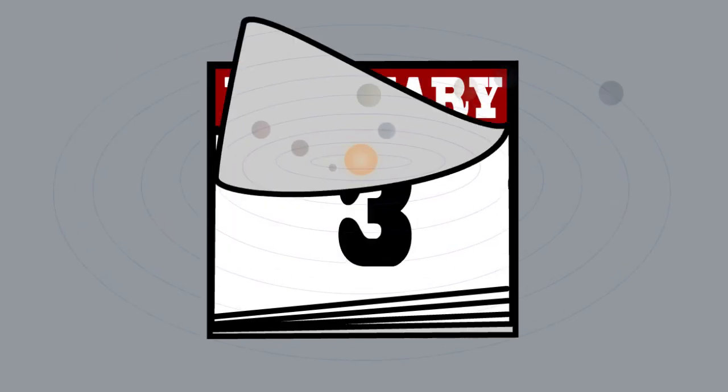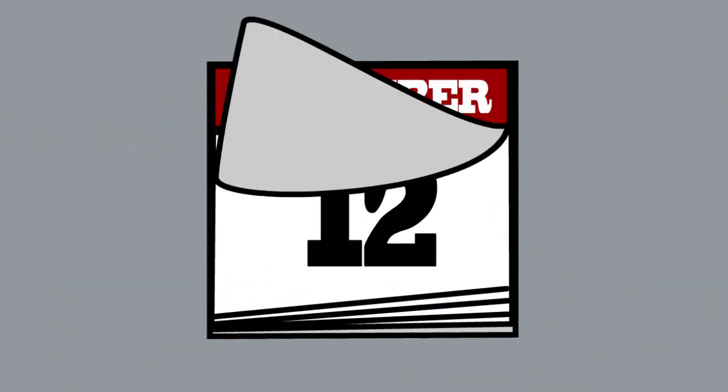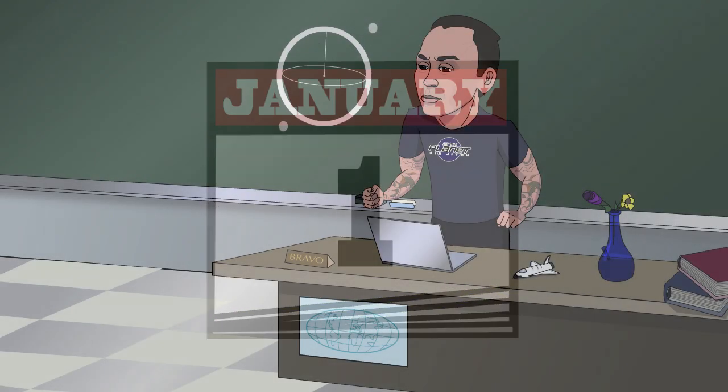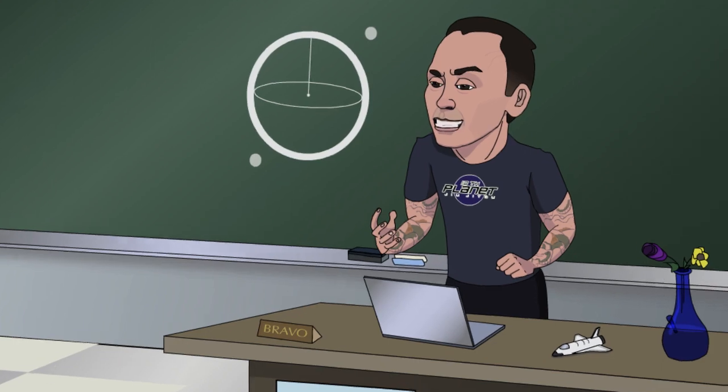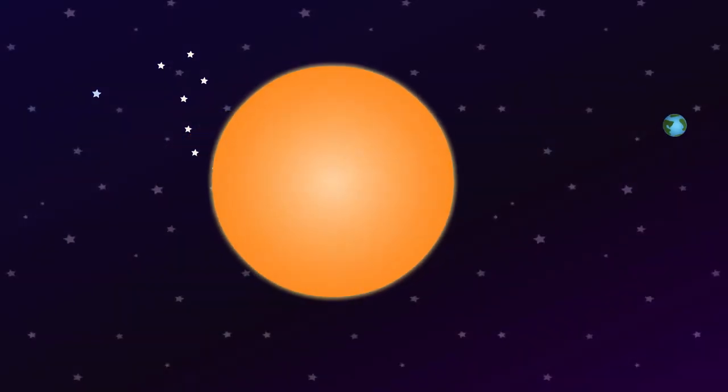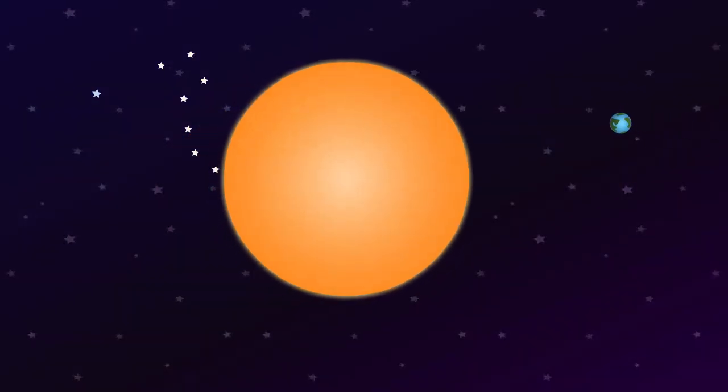It takes a year to go around the sun. It takes six months to get to the other side. This is what they're telling us.